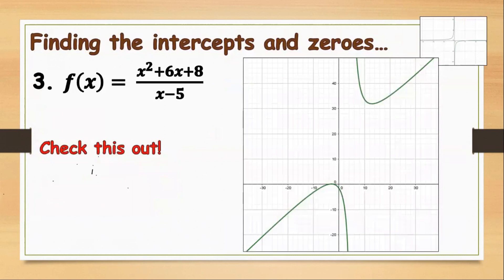Let's check the graph. As you can see, we have two x-intercept points. This is negative 2 and this is negative 4. The graph moves up and down until it reaches negative 4 and negative 2. The y-intercept is negative 1 and 3 fifths — it's somewhere here, a little more than negative 1. Those are our x and y-intercepts.